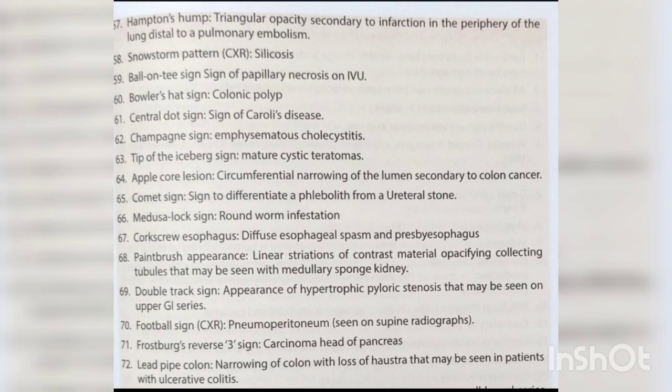Double track sign — appearance of hypertrophic pyloric stenosis seen on upper GI series. Football sign — pneumoperitoneum seen on supine radiographs. Frostberg's reverse-3 sign — carcinoma head of pancreas. Lead pipe colon — narrowing of colon with loss of haustra seen in patients with ulcerative colitis.